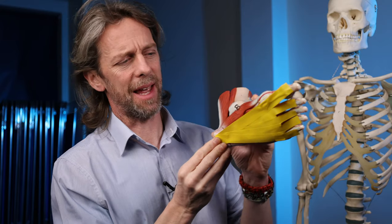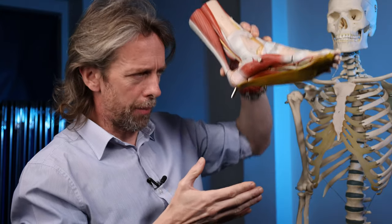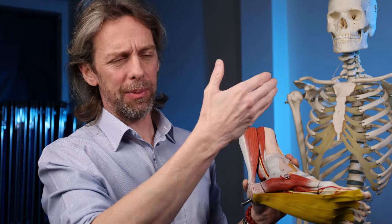So the plantar aponeurosis is part of the gait cycle. Gait is a complex series of movements. So is a muscle in the hip tight, is a muscle in the ankle tight, do you have good ankle flexibility, are the joints moving?